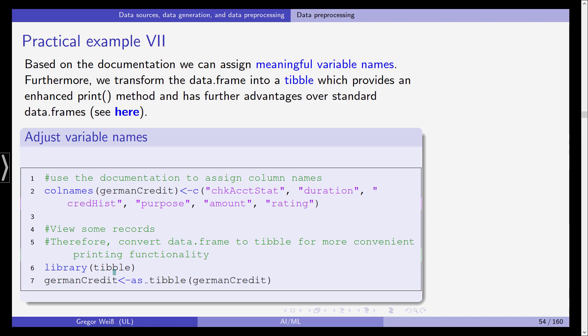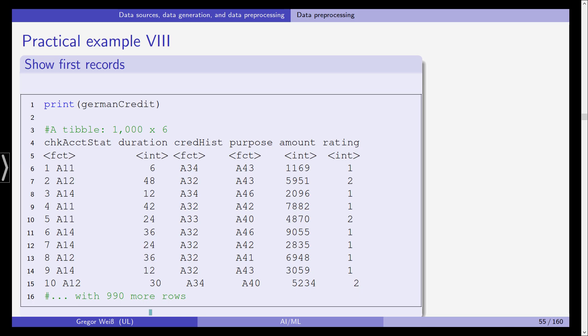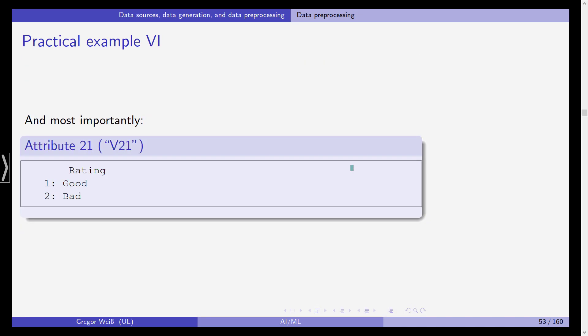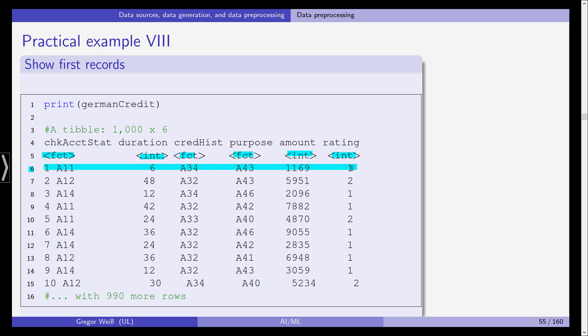We use the documentation to assign meaningful column names. The colnames command in R for German credit renames the column names. We are using checking account status, duration, credit history, purpose, amount and rating as the new column names instead of V1, V2 and so on. We first have to load the library tibble, and then we rewrite German credit as a tibble using the as_tibble command. If we print German credit, you can see it's a tibble with 1000 lines and 6 columns.